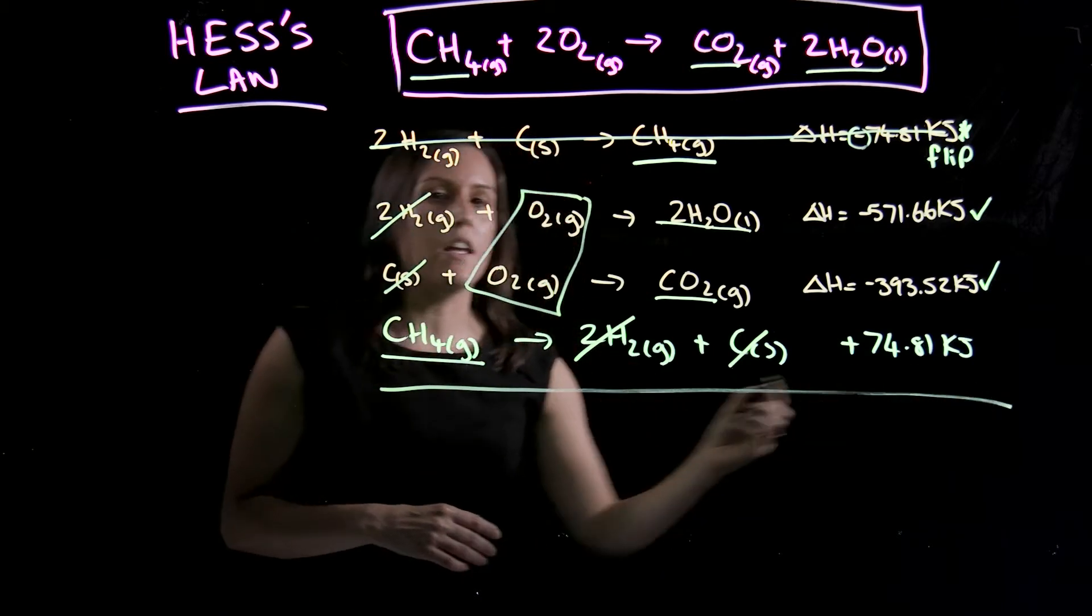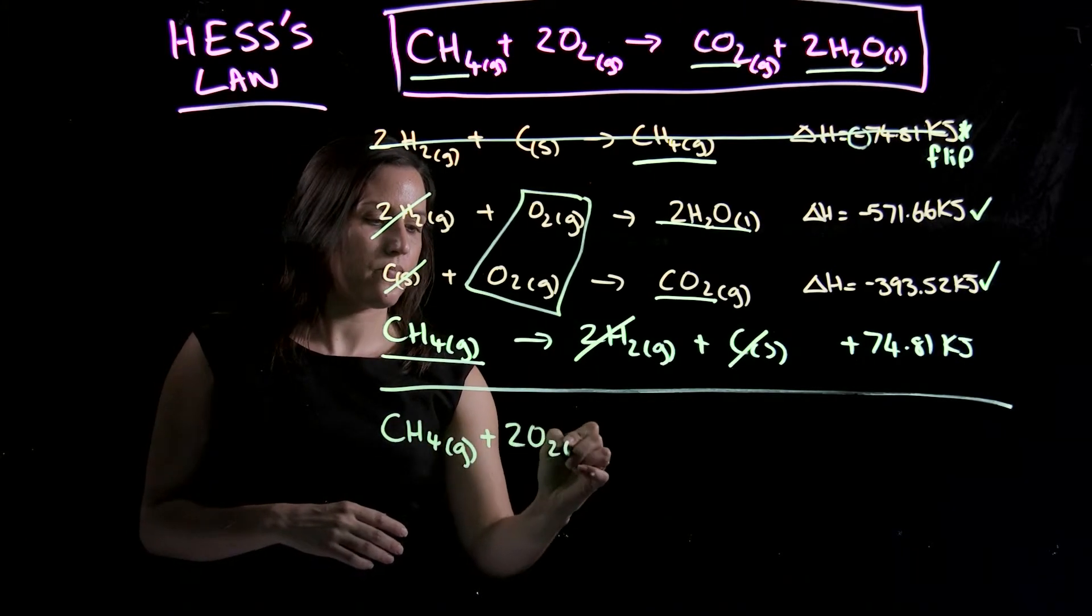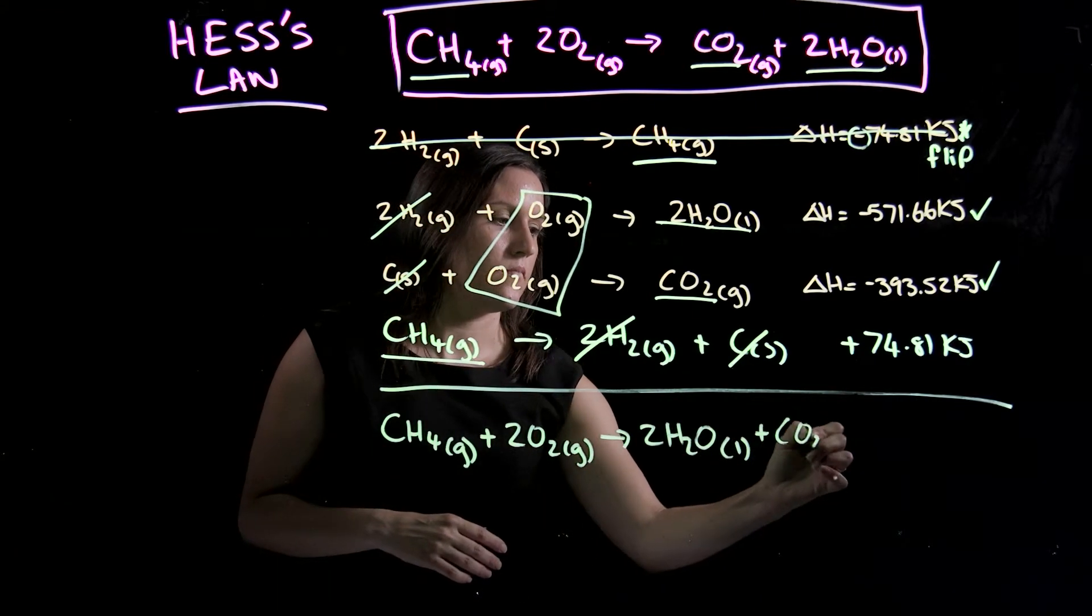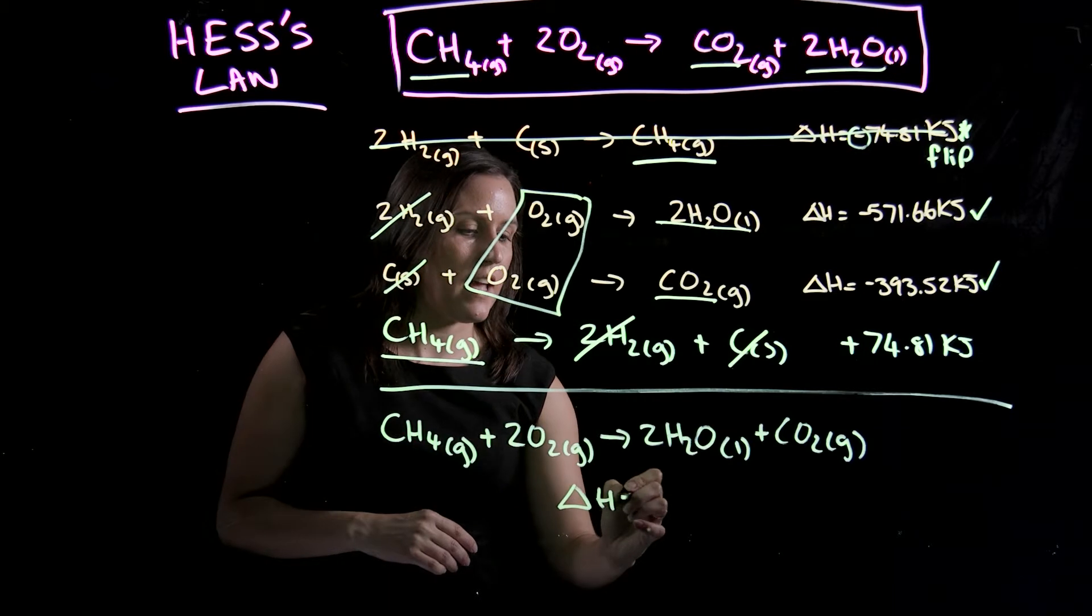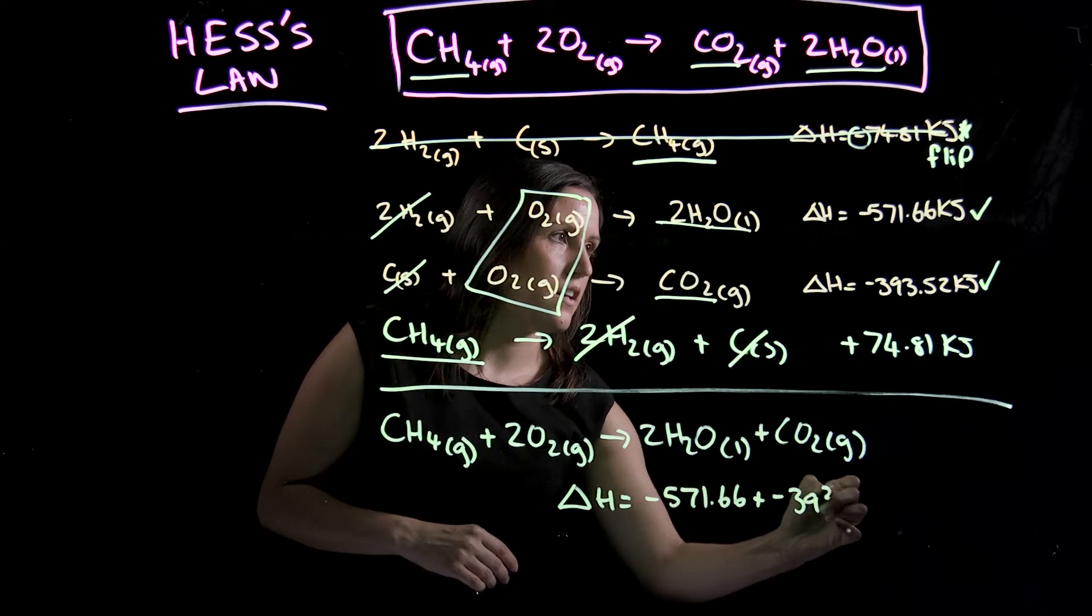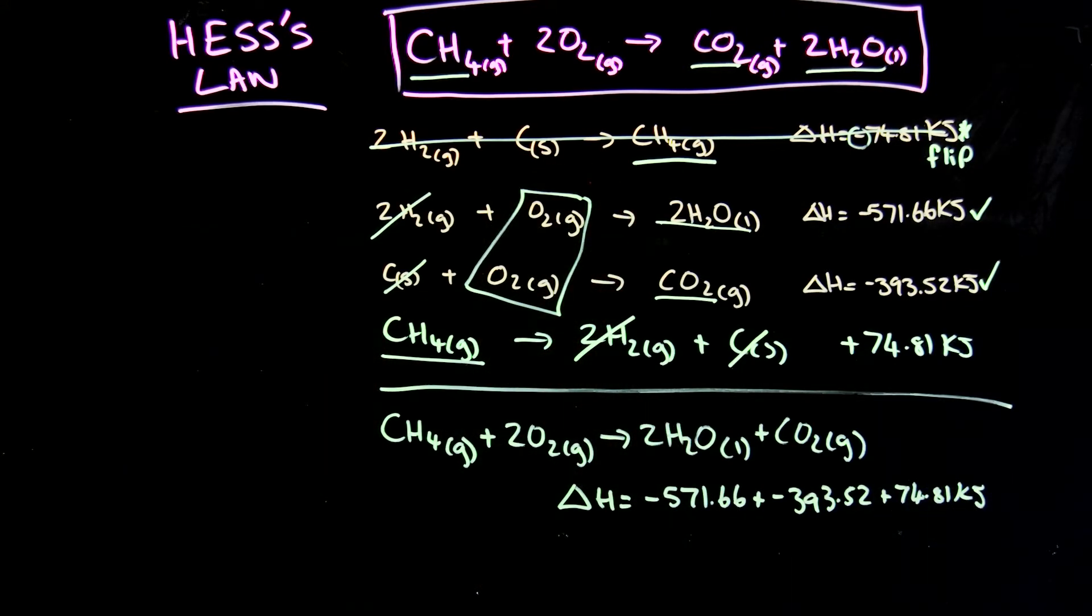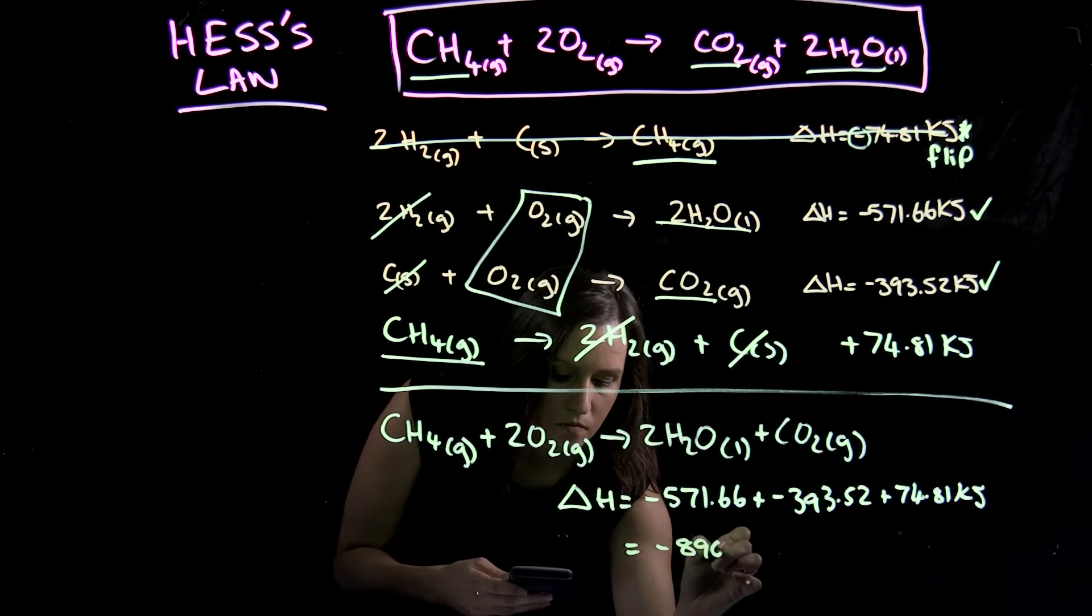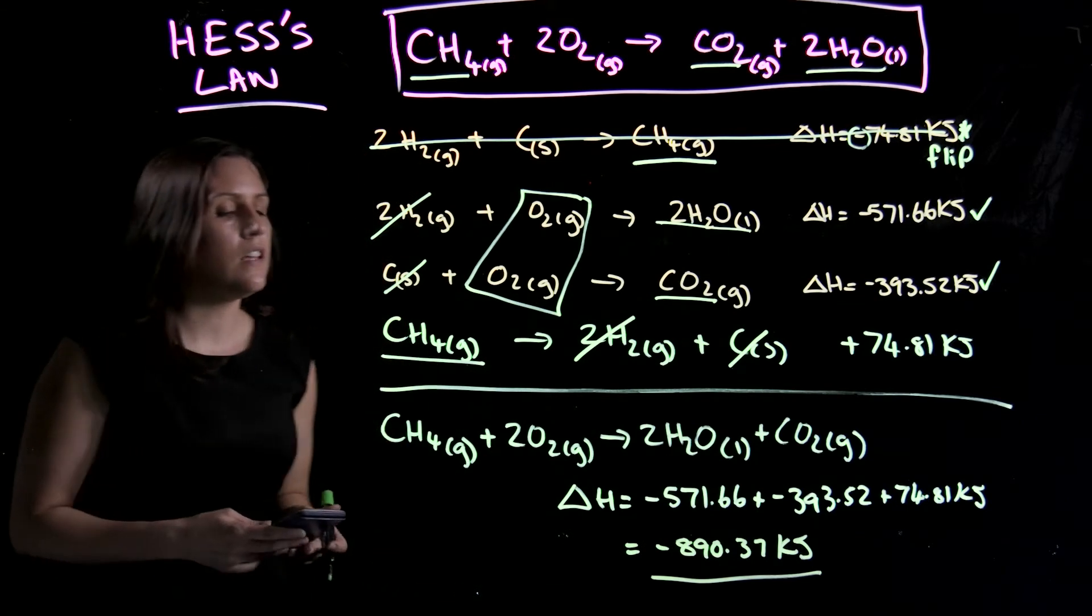So then what you can do is write this out again. So adding it up. Okay, and then you just need to get your calculator out and add up all those values. So your delta H equals minus 571.66 plus minus 393.52 plus 74.81 kilojoules. Okay, so you end up with minus 890 kilojoules.